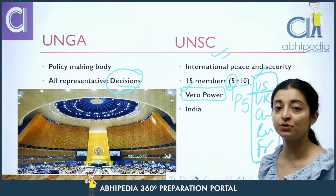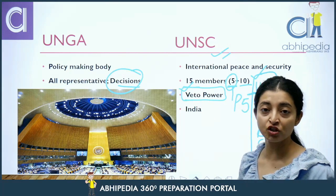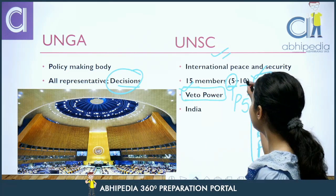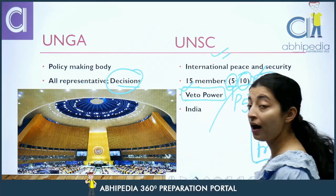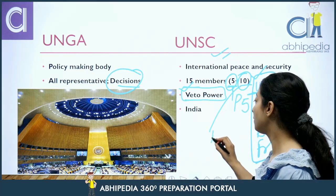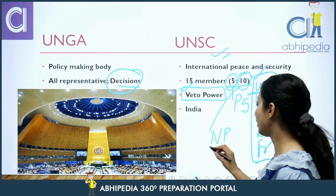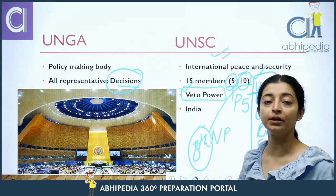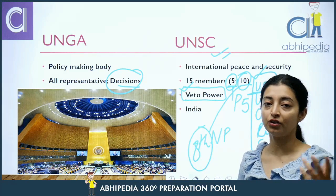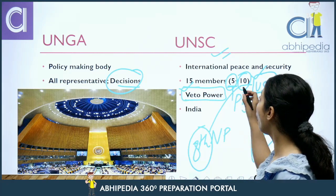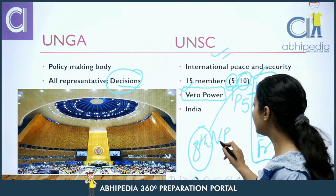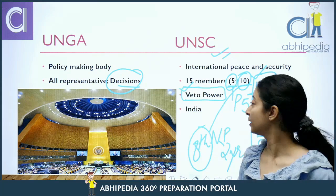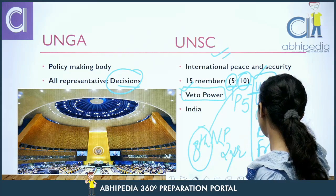Other nations also want permanent membership because permanent members get veto power. India, currently a non-permanent member, has started its 8th term as a non-permanent member of the UNSC. The non-permanent membership term is 2 years, after which countries are changed.